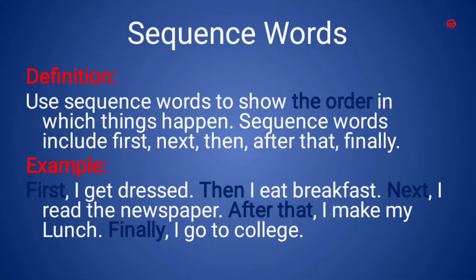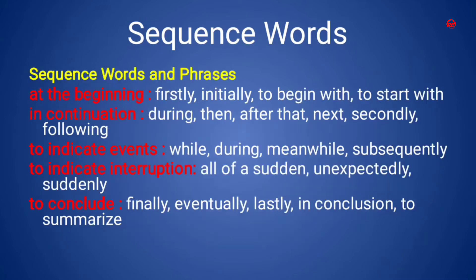Here I have given you a few sequence words and phrases which will help to identify the sequence words in a particular topic. Whenever we narrate a story or explain some incidents, we narrate it in an order. The story must contain a beginning, then a continuation, and finally a conclusion. Every incident or story must contain these three things: beginning, continuation, and conclusion.